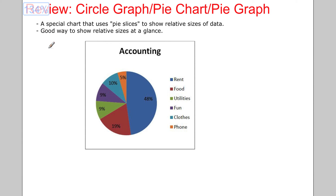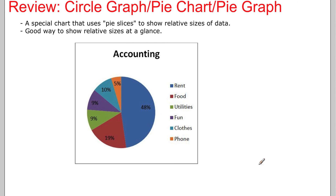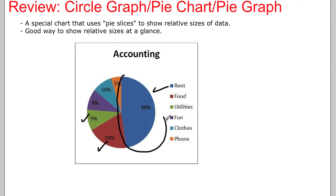The last one for review: the circle graph — the pie chart, or pie graph. A special chart that uses pie slices to show relative sizes of data. It's a good way to show relative sizes at a glance. Here is how much one would spend: most of it goes to rent, then food, then utility, and you have 9% of your income left for fun stuff. In this case, 48% goes to rent — so either you get a better job or find somewhere that doesn't cost as much to live.